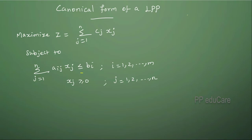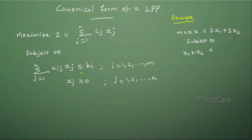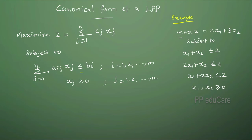For example, consider this linear programming problem: maximize Z equal to 2x1 plus 3x2, subject to x1 plus x2 less than or equal to 2, 2x1 plus x2 less than or equal to 4, x1 plus 2x2 less than or equal to 2, and x1, x2 greater than or equal to 0. Here the objective function is of maximization type and all the constraints are of less than or equal to type, except the non-negativity constraints. Therefore, this linear programming problem is in canonical form.